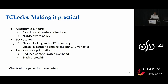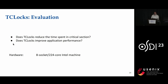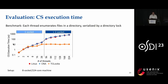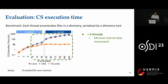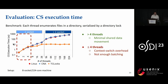In our evaluation, we aim to answer two key questions: does TCLock reduce the time spent in the critical section, and does TCLock improve application throughput? We use the same microbenchmark where each thread enumerates files in a directory and contends on the directory lock. The graph shows critical section execution time on the y-axis with increasing thread count on the x-axis. With TCLock, it provides locality for shared data, so the critical section execution time is almost similar after four threads. The shared data moves only when the server role is passed to the next waiter. However, execution time increases up to four threads because batching of requests is not able to compensate for the context-switch overhead.